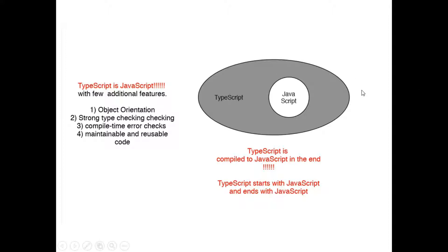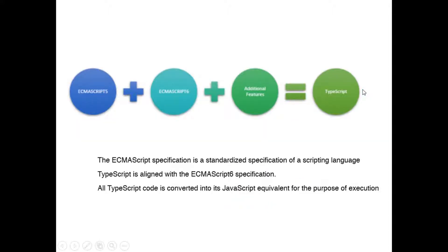Now let's look at the standard specifications for this language. Every language has some specific standardizations. ECMAScript is a standardized specification for scripting languages. JavaScript as we know is in the ECMAScript 5 specification, while TypeScript is now aligned with ECMAScript 6 specifications.